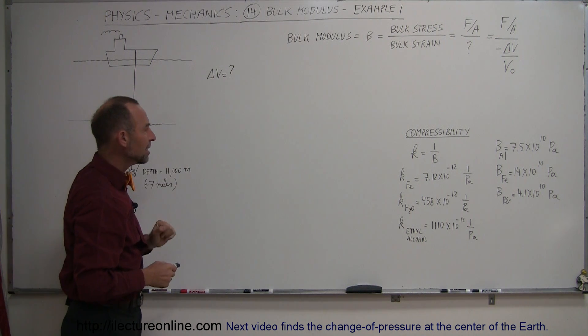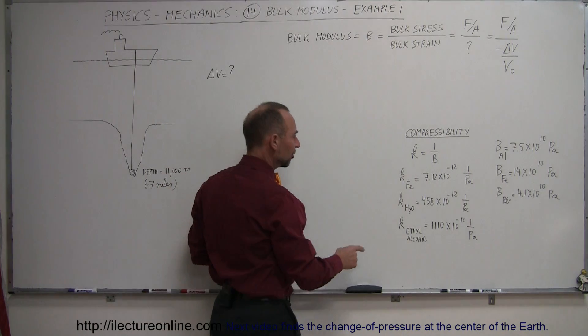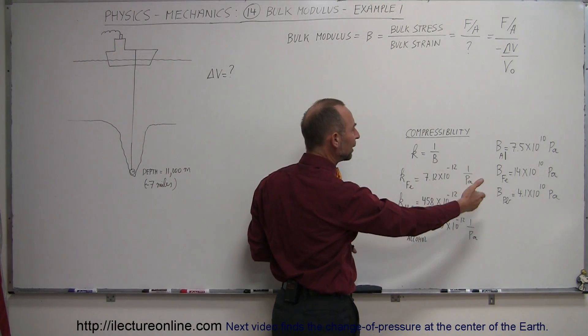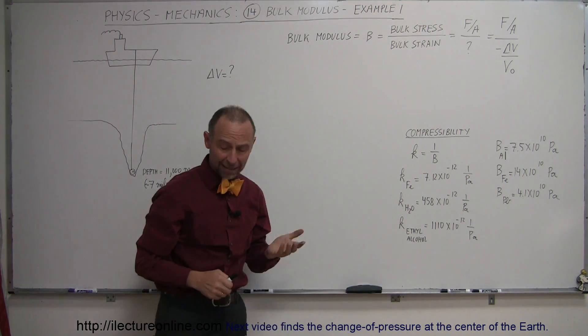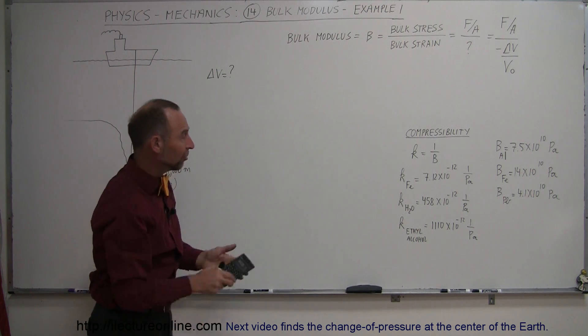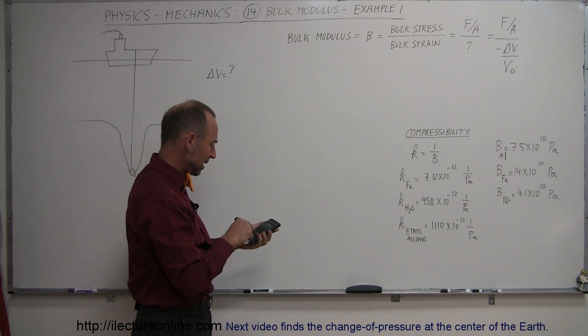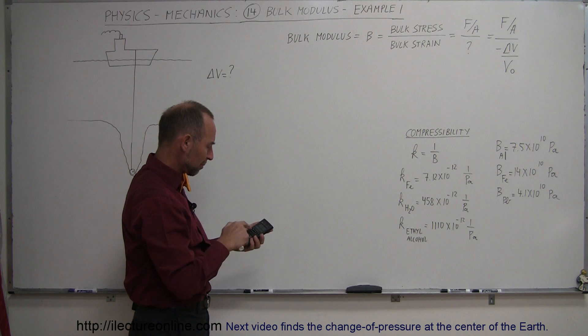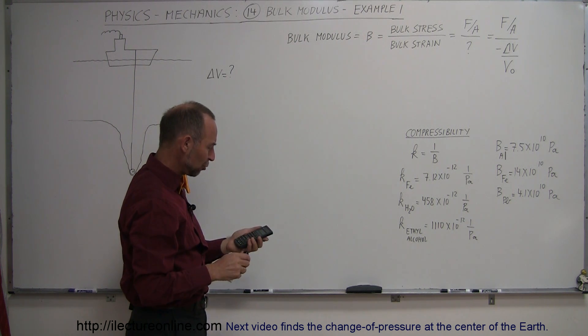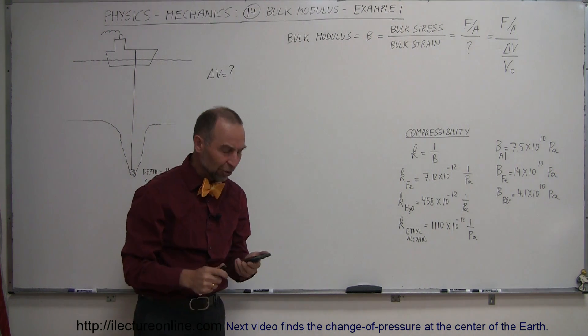All right. For that, we need, of course, a delta V. And we need the compressibility of water, which we can then turn into the bulk modulus, by simply taking the inverse of that. So, let's do that. Let's take the inverse of that.